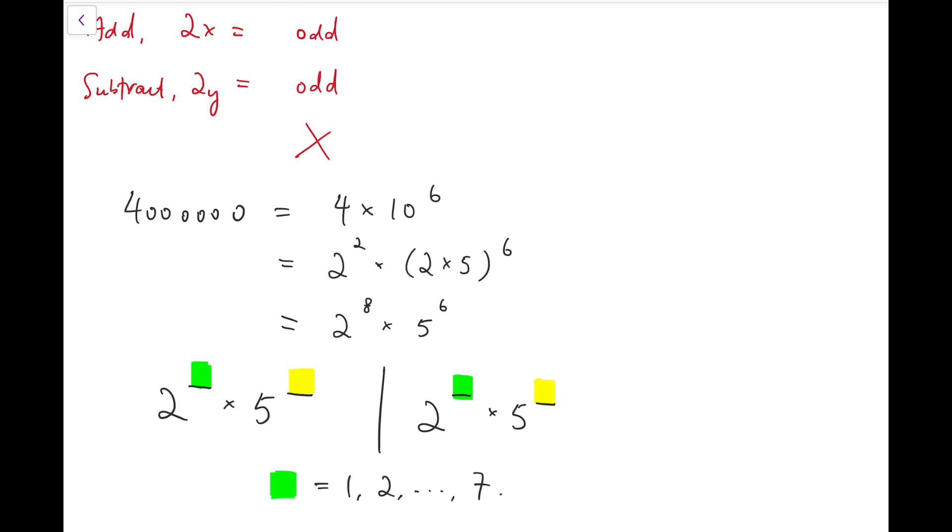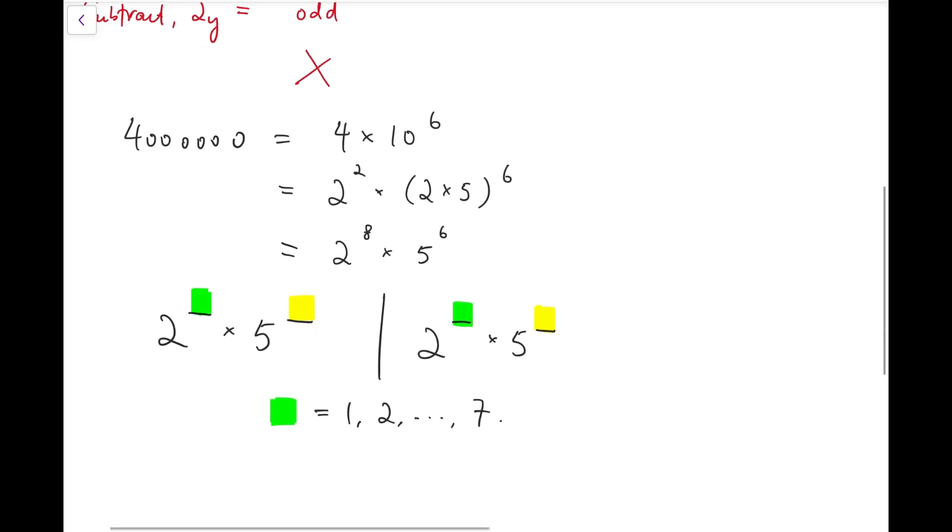Because the product has to be 2 to the power 8, we cannot take to the 8th power. So we can only take up to 7th power. Of course, we cannot take even larger because this has to be smaller than 8 in order to divide that power.